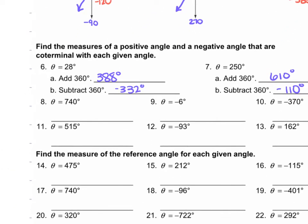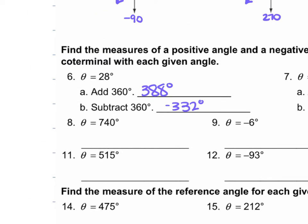For number 8, theta is 740 degrees. We shouldn't be adding 360 — we should be subtracting 360 from it. 740 minus 360 gives us 380. That's still not less than 360, so we subtract 360 again and get 20. From that 20, we subtract 360 to get our negative angle: negative 340 degrees. So 20 degrees and negative 340 degrees are coterminal angles for 740.